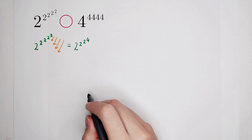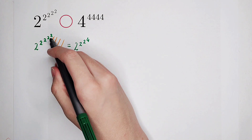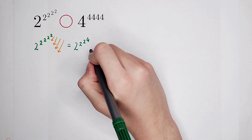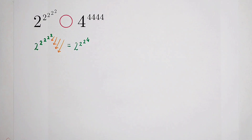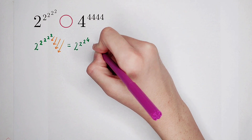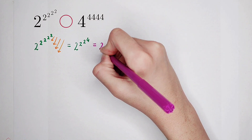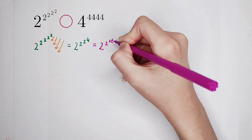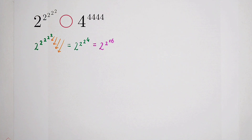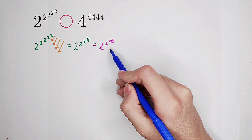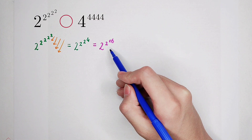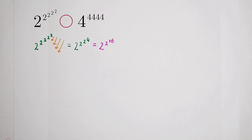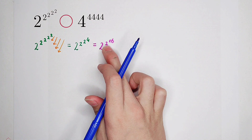So write this 4 instead of 2 squared. Then, 2 to the power of 4 is 16. Now another problem appears: 2 to the power of 16 is too large for us to calculate. We cannot continue analyzing the left-hand side.